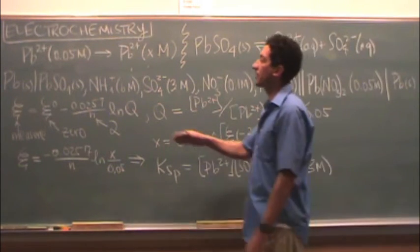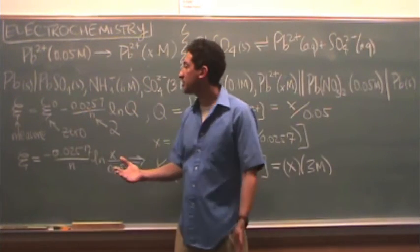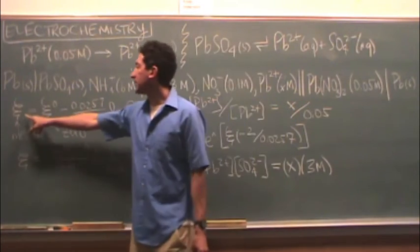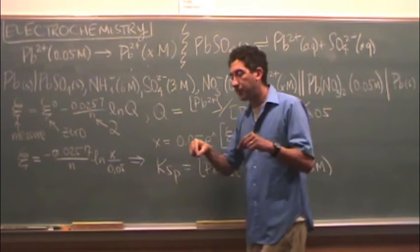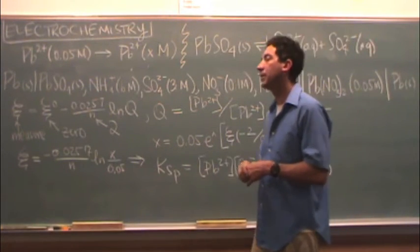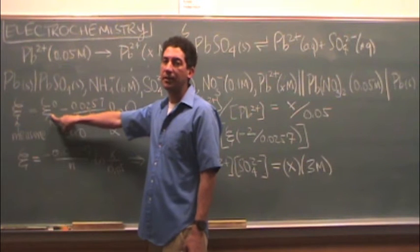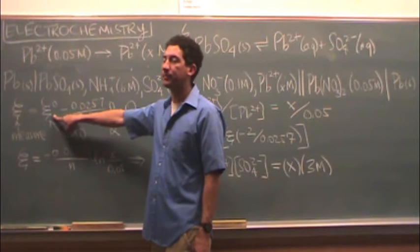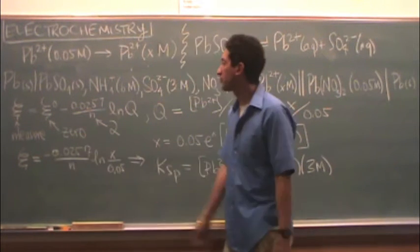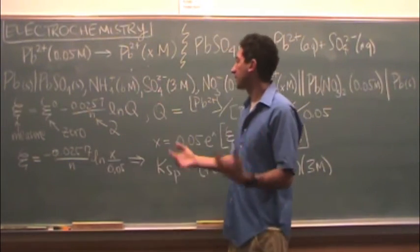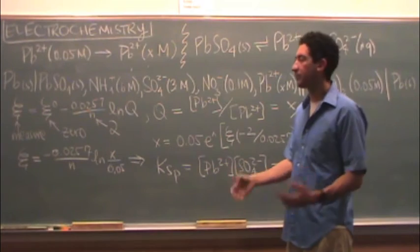So what do you do here? Again, it's a Nernst equation, just like usual. First of all, what you're going to do is measure the potential. That's what you're going to put it in the cell, measure the potential in the lab. That will be a number, some voltage. Because it's a concentration cell, the standard potential is 0, just like the previous part. And again, it's going to be 2, because it's the lead 2 plus. So it'll be 2 electrons that will be canceled out.